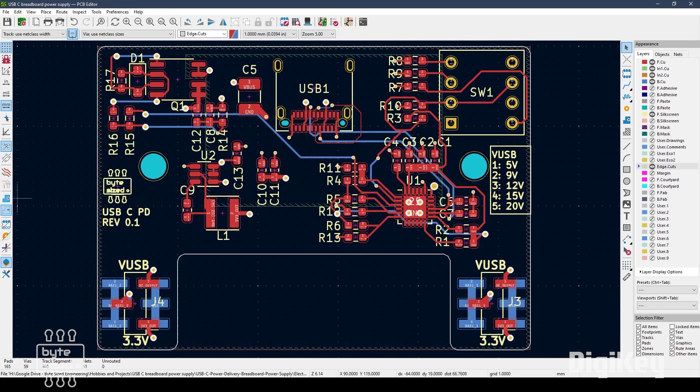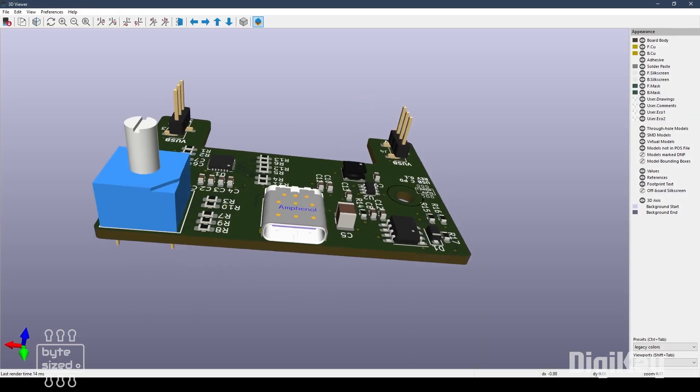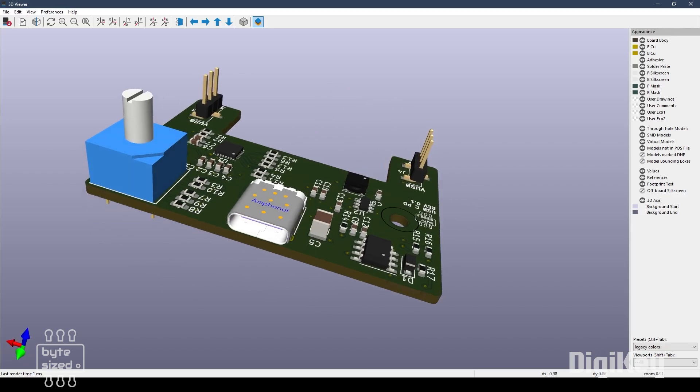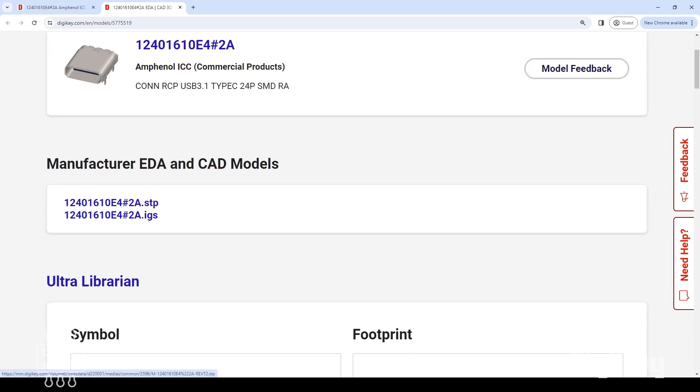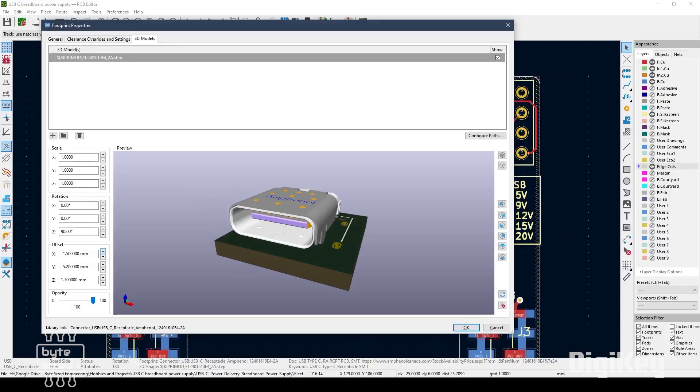We used a software called KiCad and one of the things I like about KiCad is that you can view your PCB as a 3D model. Some of the parts that we used in this design, for example, the USB connector didn't have an actual 3D model in the software. So I just went on the Digikey website and I downloaded the 3D model and I inserted it into the footprint.